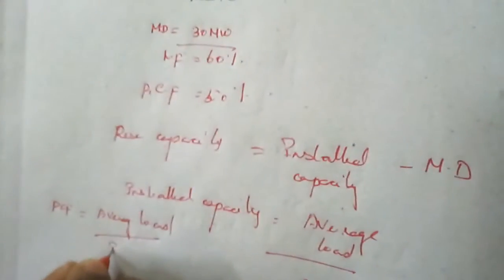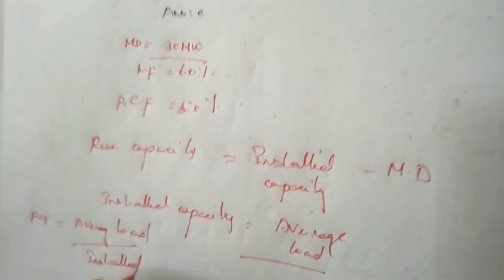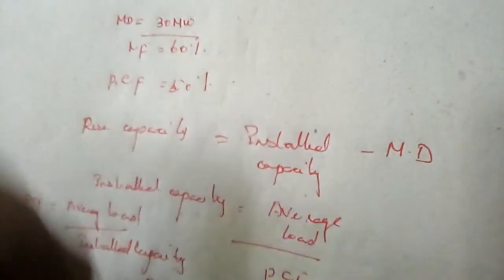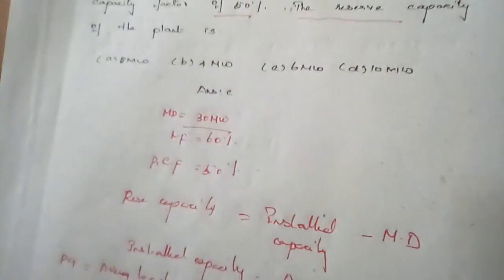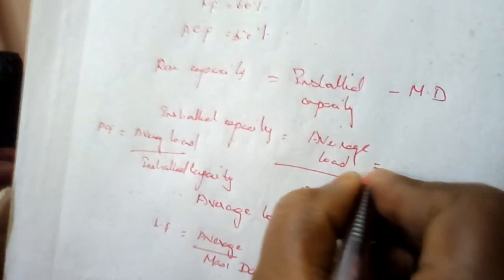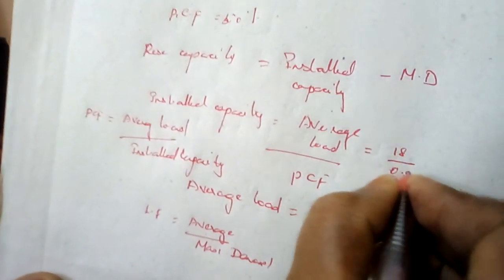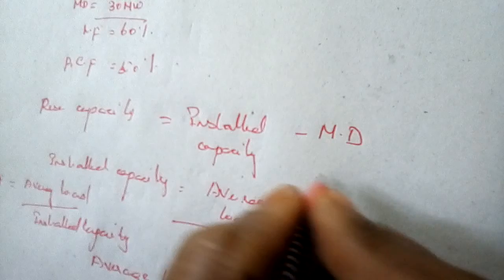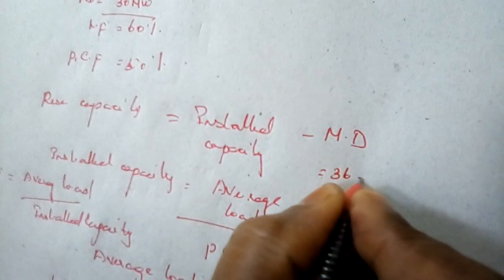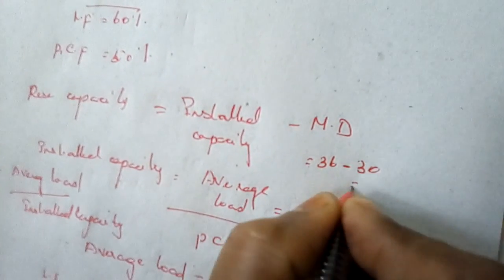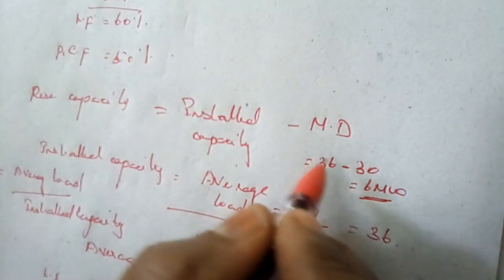The plant capacity factor is 50 percent (0.5), and the average load is 18 megawatt. So installed capacity equals 18 divided by 0.5, which equals 36 megawatt. Reserve capacity equals installed capacity minus maximum demand, which is 36 minus 30, giving 6 megawatt as the reserve capacity.